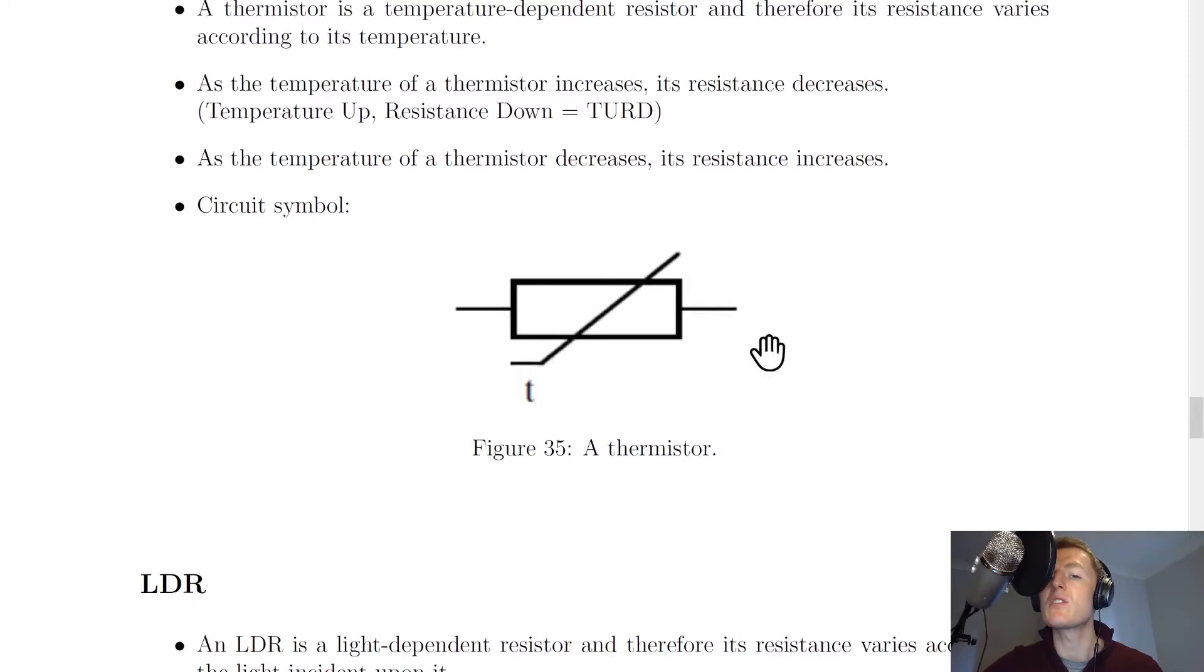So we have a resistor, the rectangle, but this time we've got something that looks a bit like a tick, but it goes along and then up diagonally through the thermistor. And sometimes you might see a little T labeled there, but it doesn't always need to have the T.